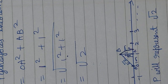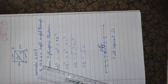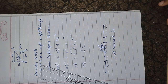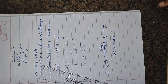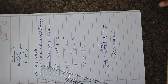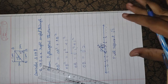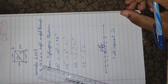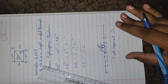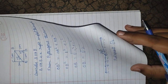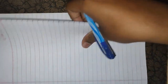Understood? This is very important. To summarize what I did: first I considered a unit square, then I drew one diagonal between O and B, then I considered right angle triangle OAB. Using Pythagoras theorem I found the hypotenuse was √2. Then I represented it on the number line.